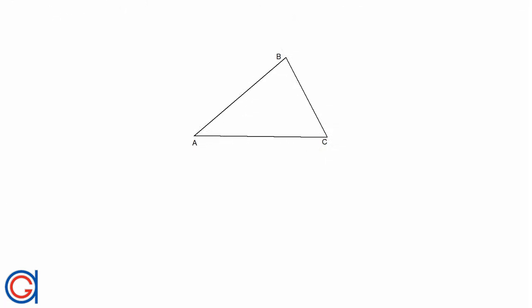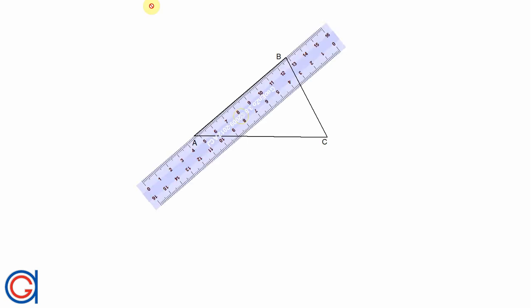So to start, we are going to elongate the three sides of the given triangle with construction lines using a ruler, as can be seen here.